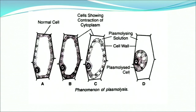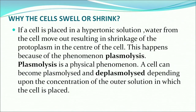Here is an illustration of plasmolysis. Plasmolysis and imbibition are more or less interlinked. If a cell is placed in a hypertonic solution, water from the cell moves out, resulting in shrinkage of the protoplasm to the center of the cell. This phenomenon is called plasmolysis, and it is a physical phenomenon — diffusion, osmosis, and plasmolysis are all physical phenomena. A cell can become plasmolyzed or deplasmolyzed depending upon the concentration of the outer solution.